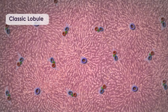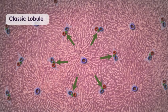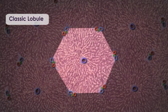In the classic liver lobule, blood flows from the portal triads toward the central vein. Bile flows in the opposite direction, from the central position toward the portal triads at the lobule periphery. Remember, the classic liver lobule model emphasizes the anatomical structure of the lobule.